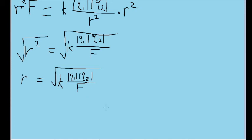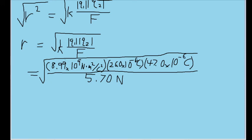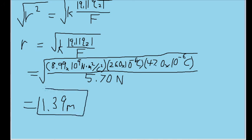All that's left to do is substitute our values in. For the Coulomb's constant k, I'm plugging in 8.99 times 10 to the ninth newton meter squared per coulomb squared. Plugging this into our calculator, we find that the distance is equal to 1.39 meters. And that is the distance between the two point charges.